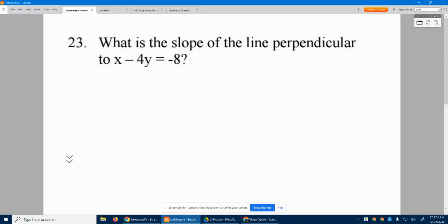Question 23: What is the slope of the line perpendicular to x minus 4y equals negative 8? Well, we need to figure out what this guy's slope is. To figure out what his slope is, I need y by itself.